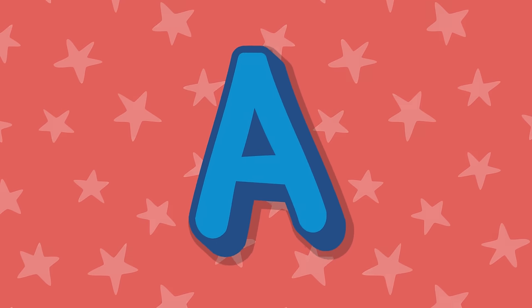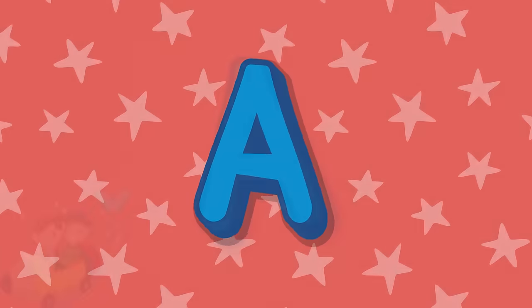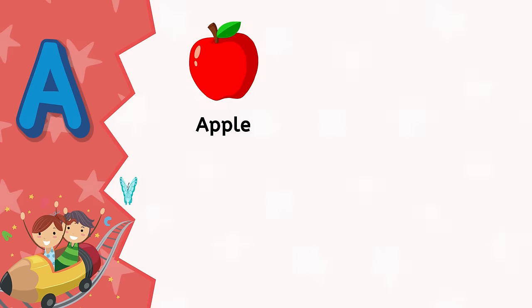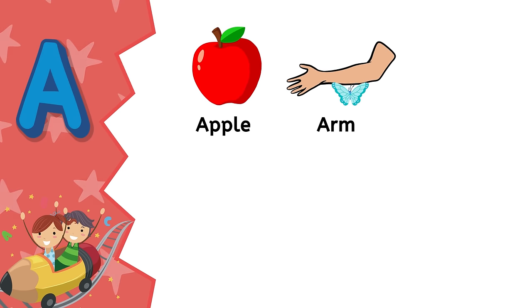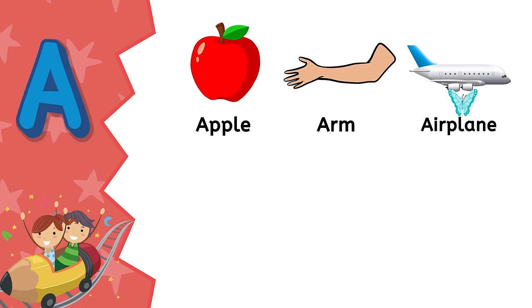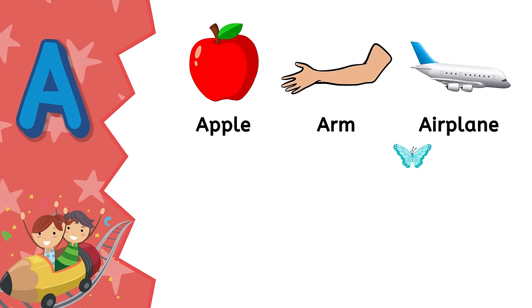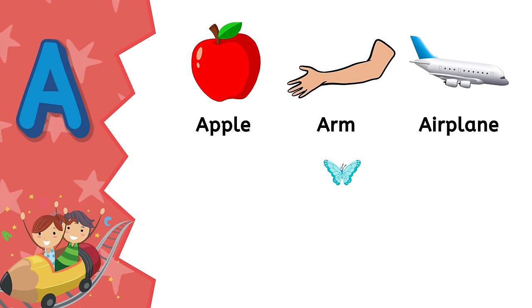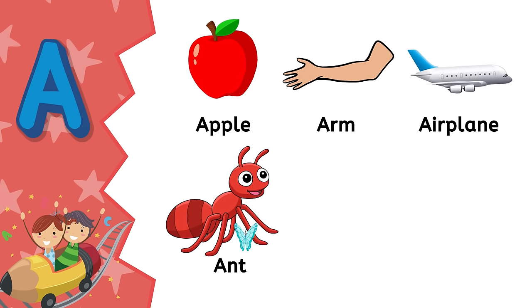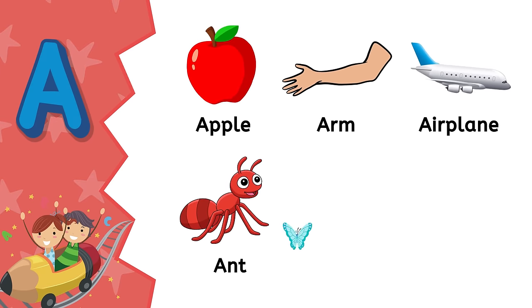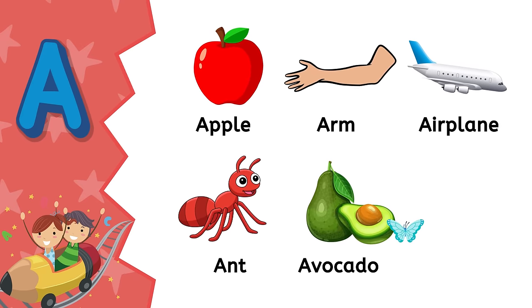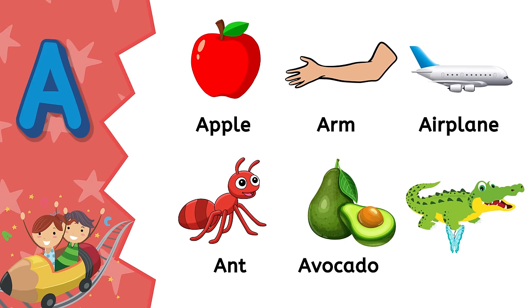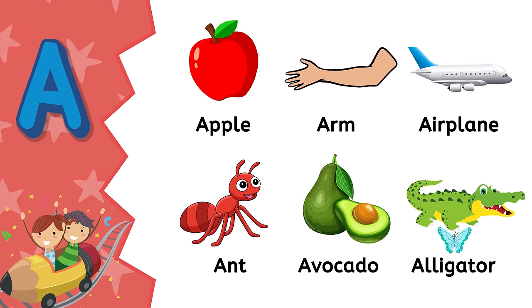A. A is for apple. A is for arm. A is for airplane. A is for ant. A is for avocado. A is for alligator.